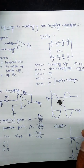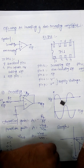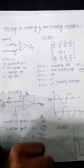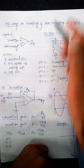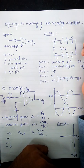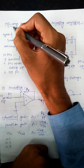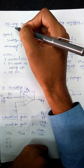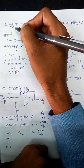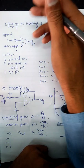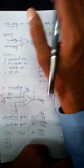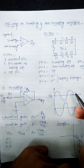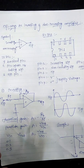Good afternoon to all of you. Today we are discussing about the practicals, that is the op-amp as inverting and non-inverting amplifier. Op-amp is nothing but the operational amplifier — you are giving the signal to the operational amplifier and that signal will be amplified. There are two types of the operational amplifier we are discussing in this lecture.